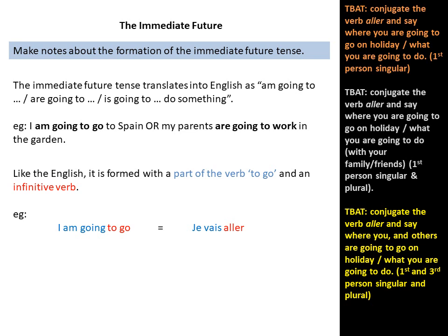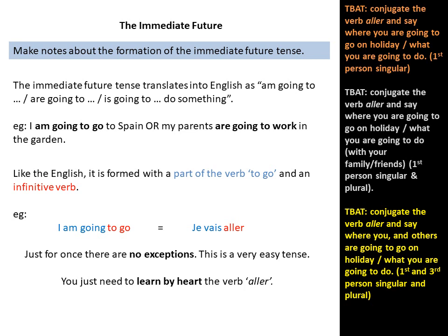As you can see, in English: 'I am going to go' — 'I am going' is from the verb 'to go', and 'to go' is the infinitive. In French, je vais is part of the verb 'to go', and aller is the infinitive. Just for once there are no exceptions. This is a really easy tense. All you need to do is learn the verb aller by heart and it should be easy.